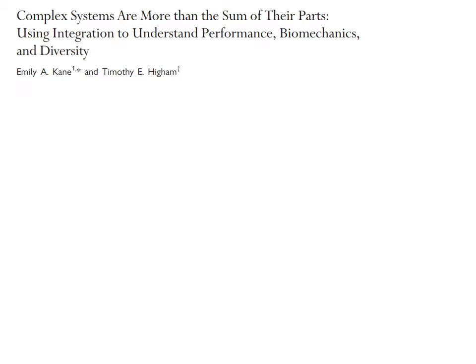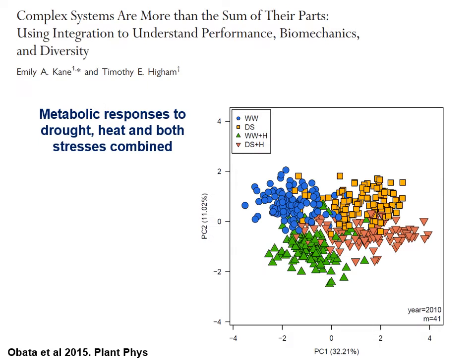To give an example, we have metabolic data from maize plants subjected to four different conditions: in blue, well-watered plants; in yellow, drought stress plants; in green, well-watered plus heat stress; and DS plus H is drought stress plus heat stress. This is a graph of principal component analysis, a multivariate analysis used to see how different the samples are.